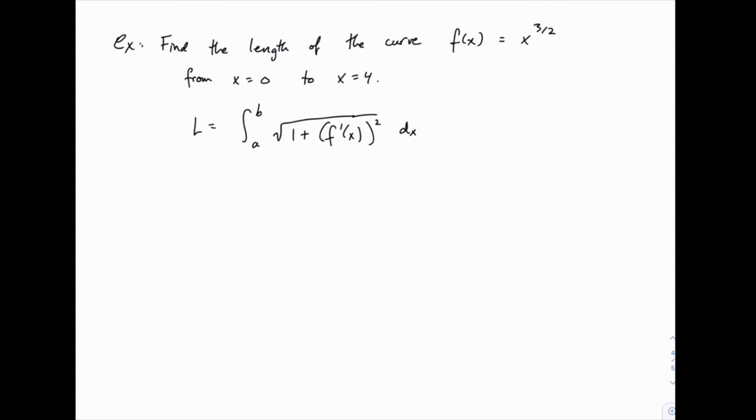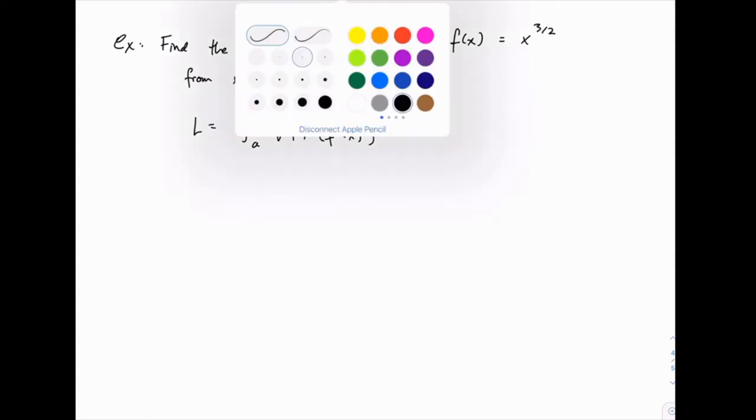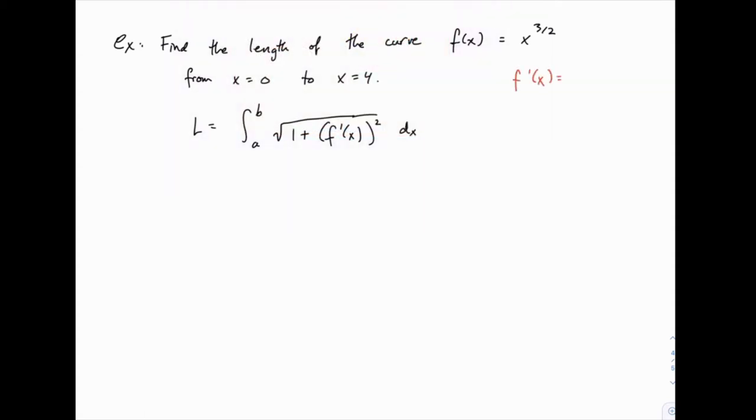But for this one, we can find the derivative f prime of x is 3 halves x to the 1 half. So if we plug that into the formula, we have 1 plus 3 halves x to the 1 half squared. Don't forget to square that. And then we have the integral from 0 to 4, because we're given that we're moving from x equals 0 to x equals 4, so that's our starting and ending points.